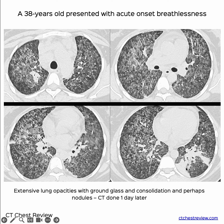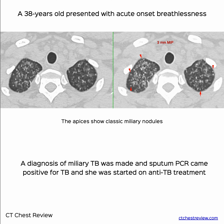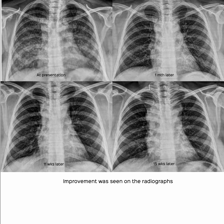There is ground glass, some consolidation, and a hint of possible nodules. In such cases, when you look at the apices — which are the least involved — and use 3mm MIPs, you can actually see these miliary-type nodules, which allow us to make a diagnosis of miliary TB. This was proven when the sputum PCR came back positive.